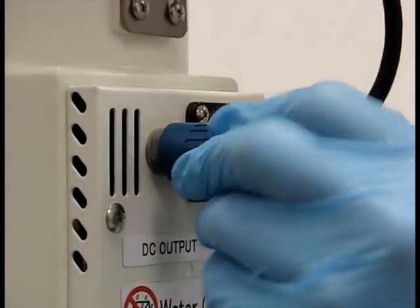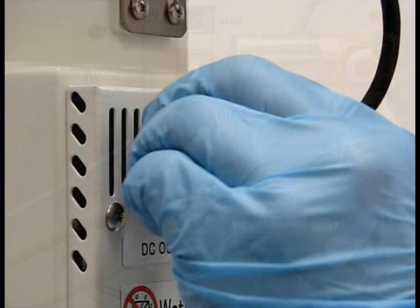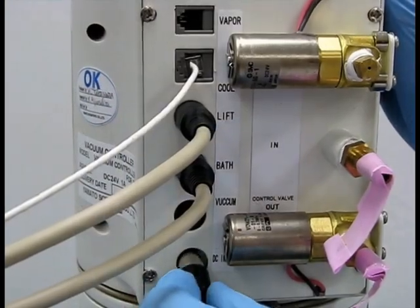Connect and fasten the larger male plug of the DC harness to the main unit and the smaller male plug to the vacuum regulator.